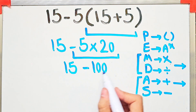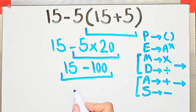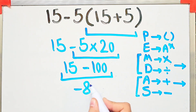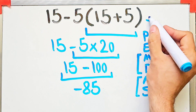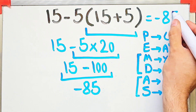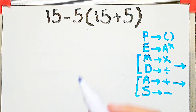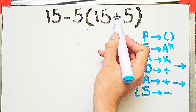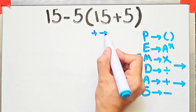And 15 minus 100 equals negative 85. The final answer is negative 85. Okay guys, if you're ready, let's solve another question.